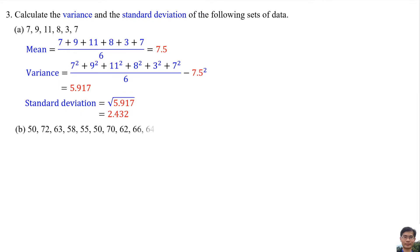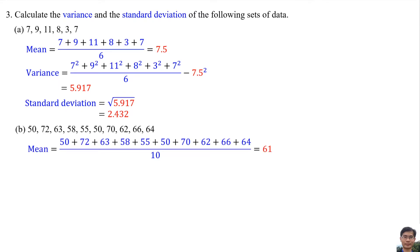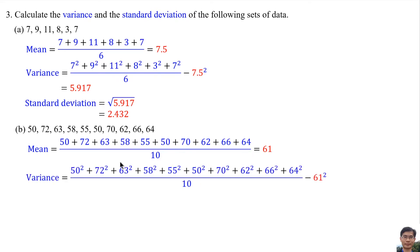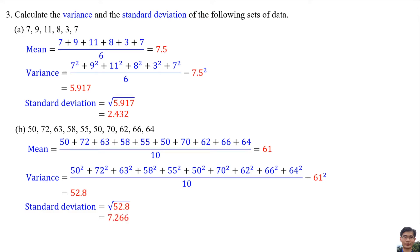Part B: The mean is the average of the data, which is 61. The variance is calculated by squaring all the numbers, adding them, dividing by the total number of data, then subtracting the mean squared. So the variance is 52.8. The standard deviation is the square root of the variance — square root of 52.8 — which equals 7.266.